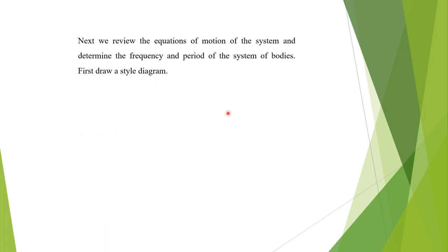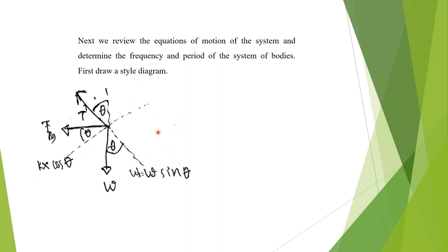Now, next we will review the equation of motion and the frequency of the system. But first, draw a free body diagram. Look at the diagram — we will explain using the Newtonian method. We will draw a free body diagram here.